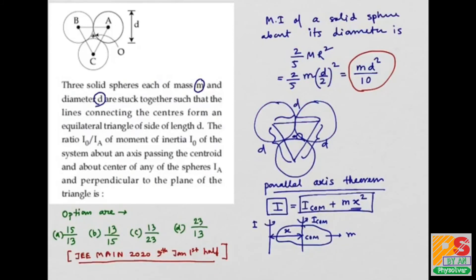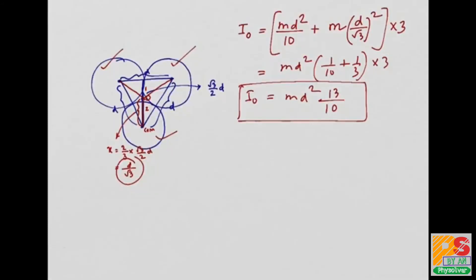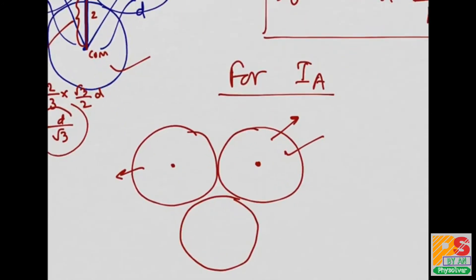Now we have to find I_A. I_A is the moment of inertia of the system about this point A. Let's draw the diagram again. For this sphere, I_A is nothing but moment of inertia of this sphere about its own center of mass. Now for this sphere, this is I_COM, and the distance is D. And for this sphere, this is I_COM, and the distance is still D.